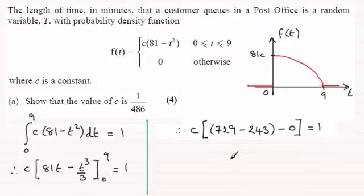729 minus 243 gives me 486. So we've got 486c equals 1. And therefore c must be equal to 1 divided by 486.